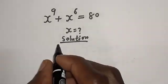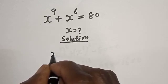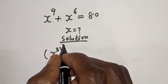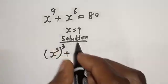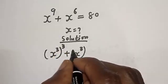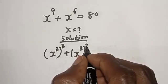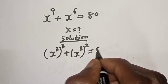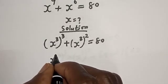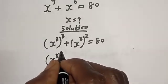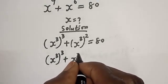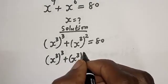s raised to power 9 can be written as s raised to power 3, to the power of 3, plus s raised to power 6, which is s raised to power 3 squared, is equal to 80. So this is (s³)³ plus (s³)² equals 80.